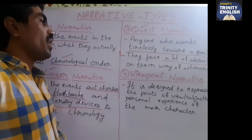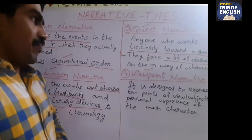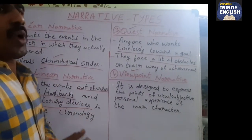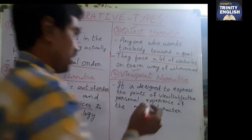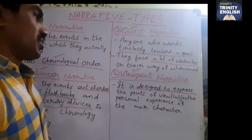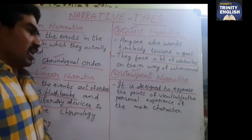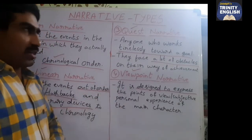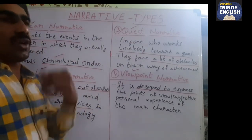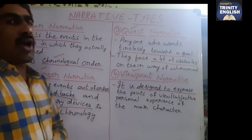The fourth type is viewpoint narrative. A viewpoint narrative is told from the viewpoint of one particular character. It is designed mainly to express the points of view or subjective personal experience of the main character — whatever view comes from the main character's perspective is called a viewpoint narrative.